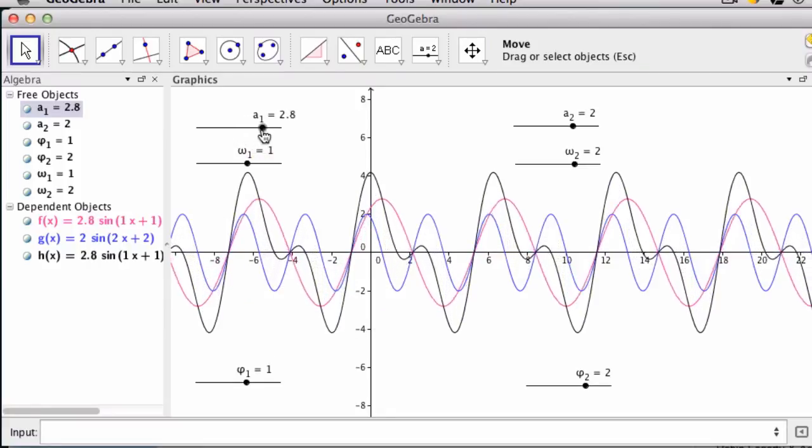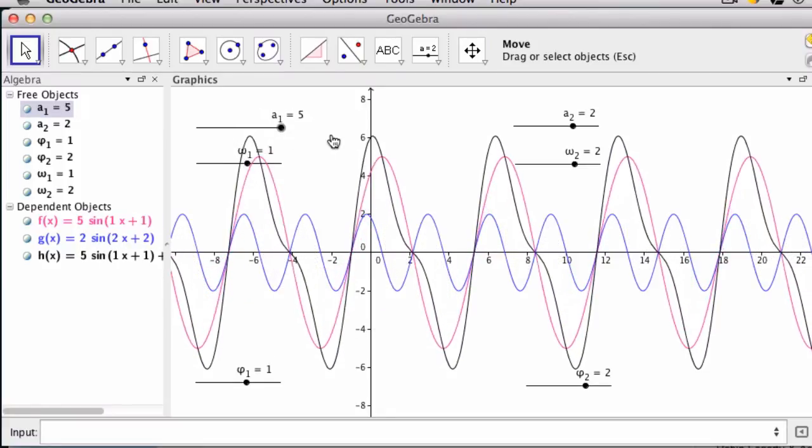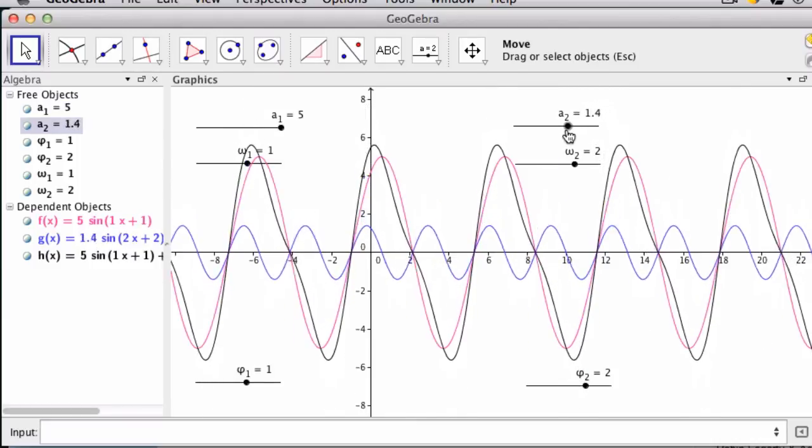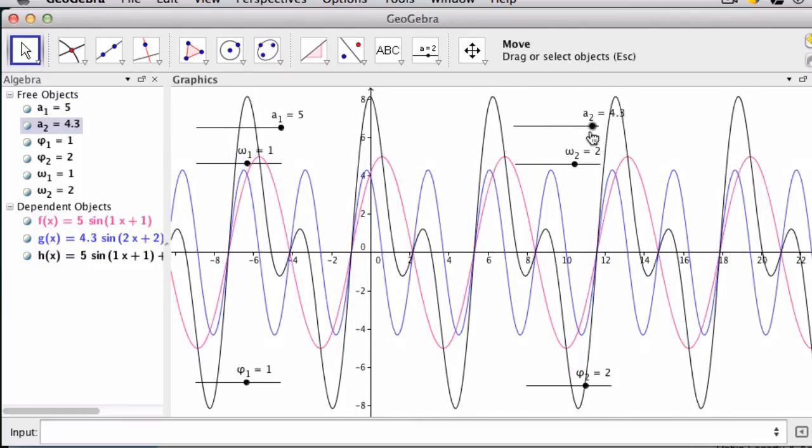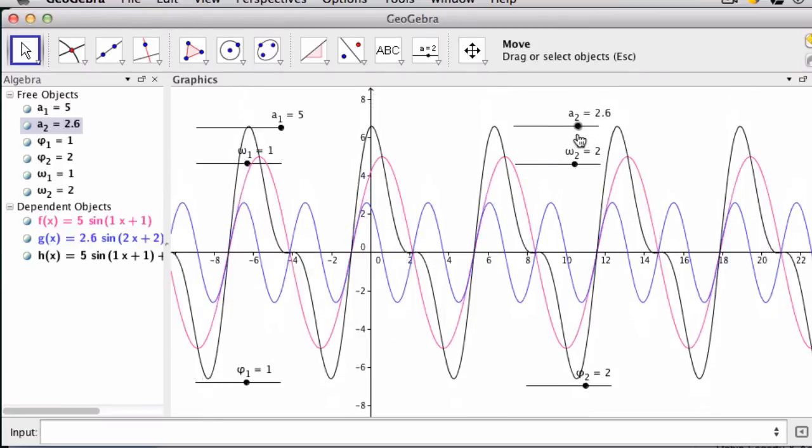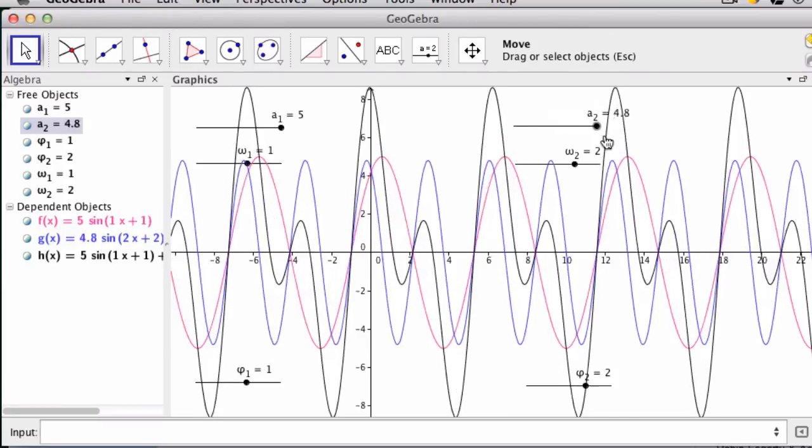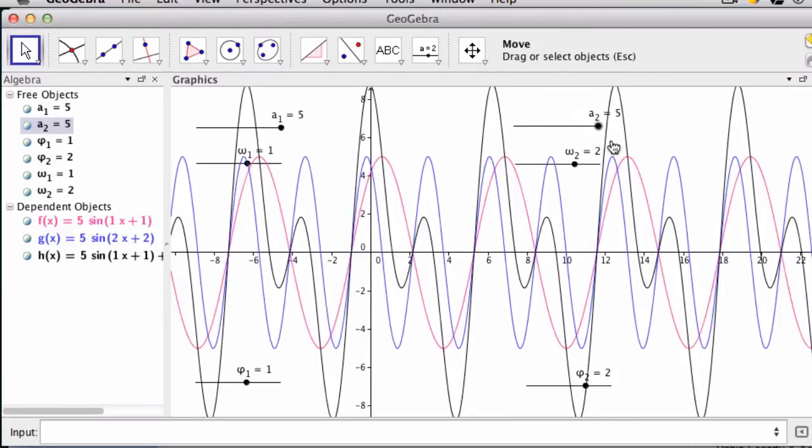Right, and now what's nice is, the pink wave is, excuse me, the black wave is now the result of adding these two waves. We want to figure out what's the easiest way, or the right or the best way, to get that black wave to reach the highest amplitude.